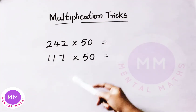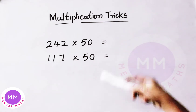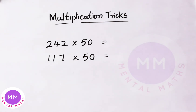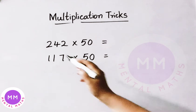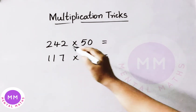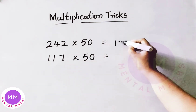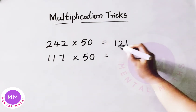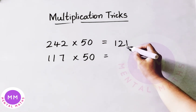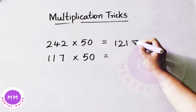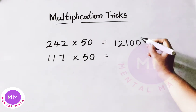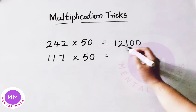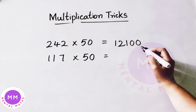See here the next examples. We are going to multiply any number by 50 quickly. What we have to do here? Divide the given number by 2: 24 half is 12, 2 half is 1, so 121. Write down 2 zeros at last. So the answer is 12,100.